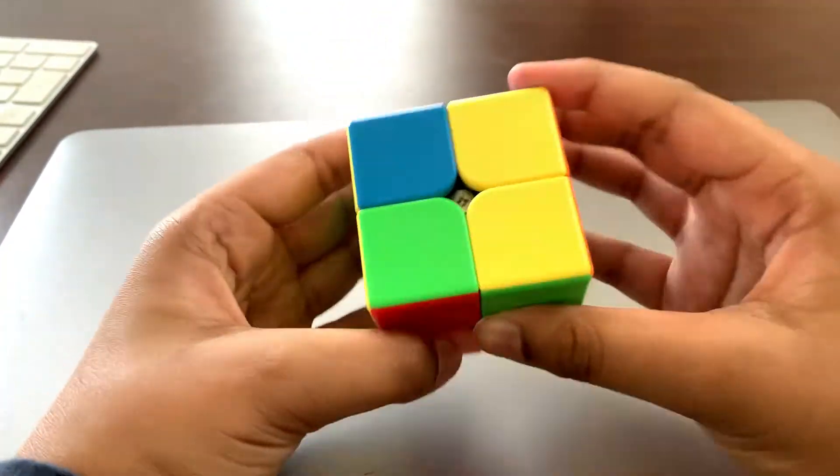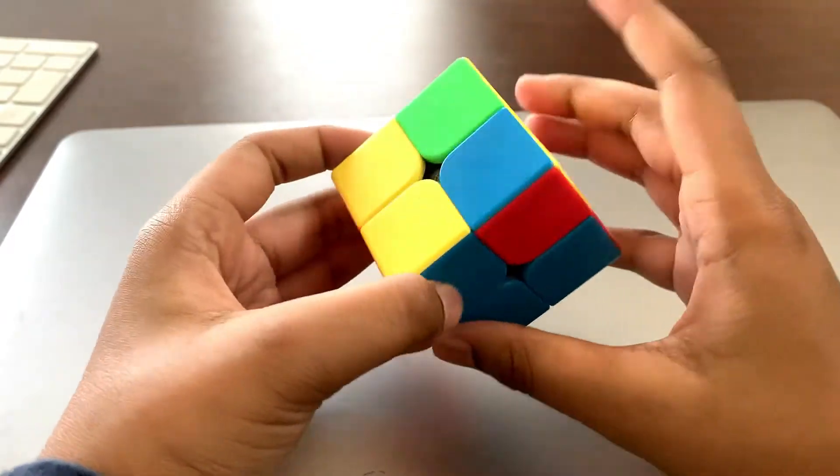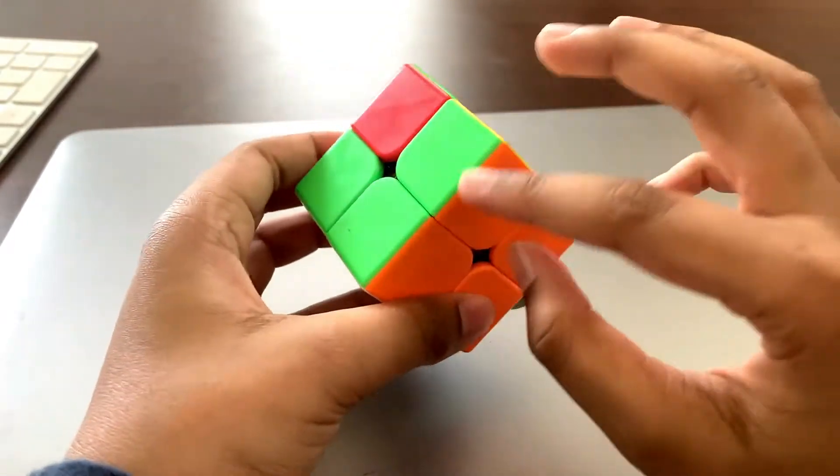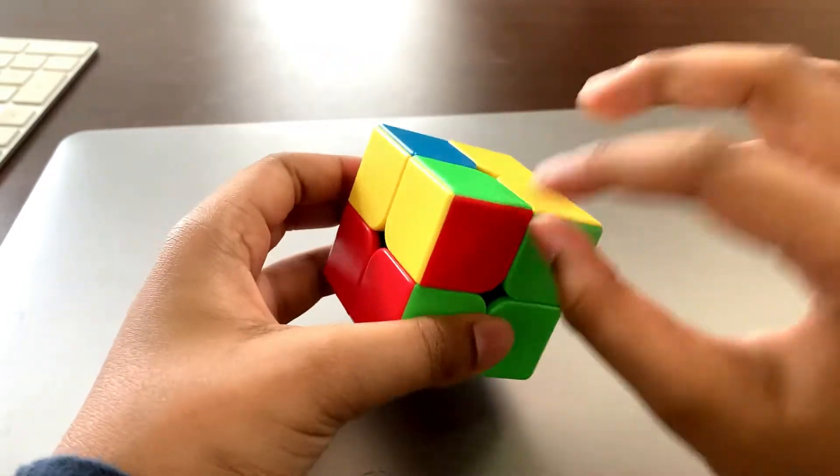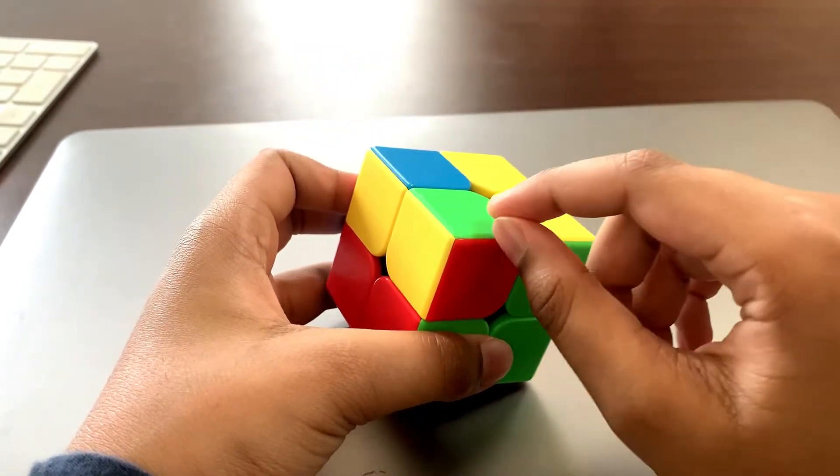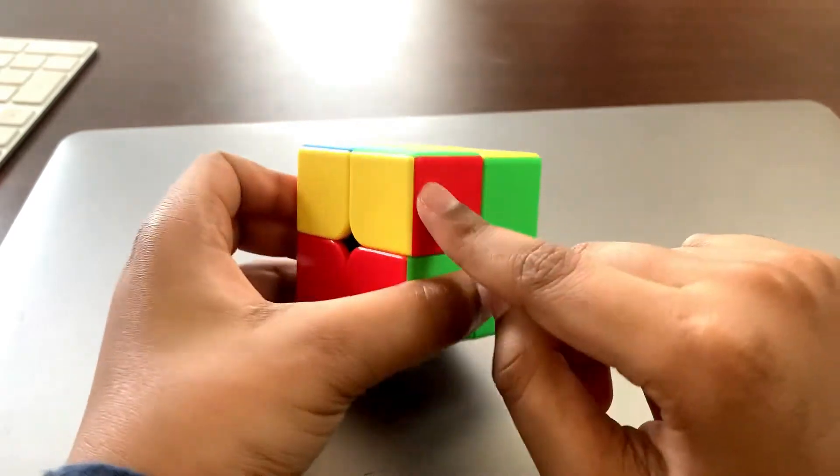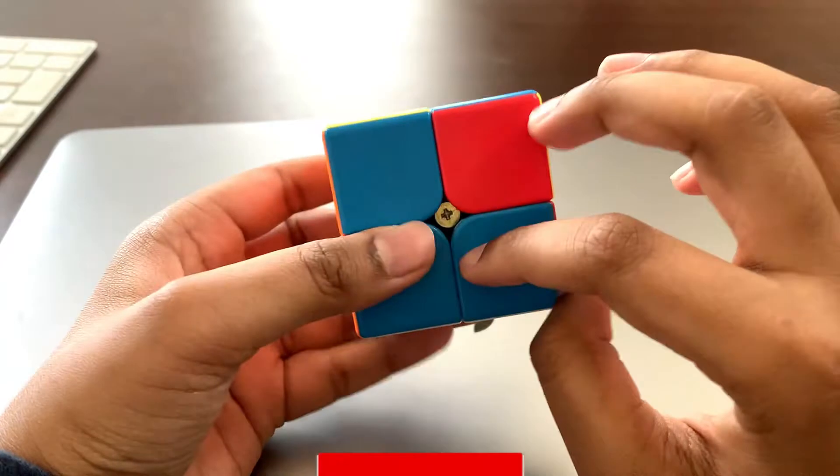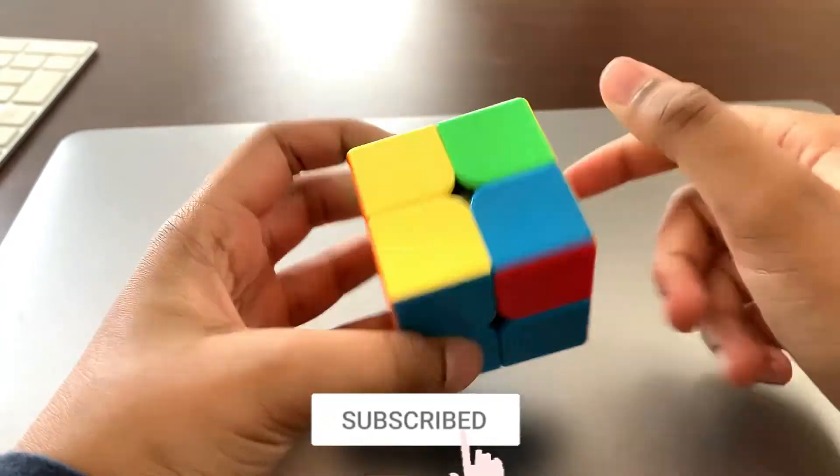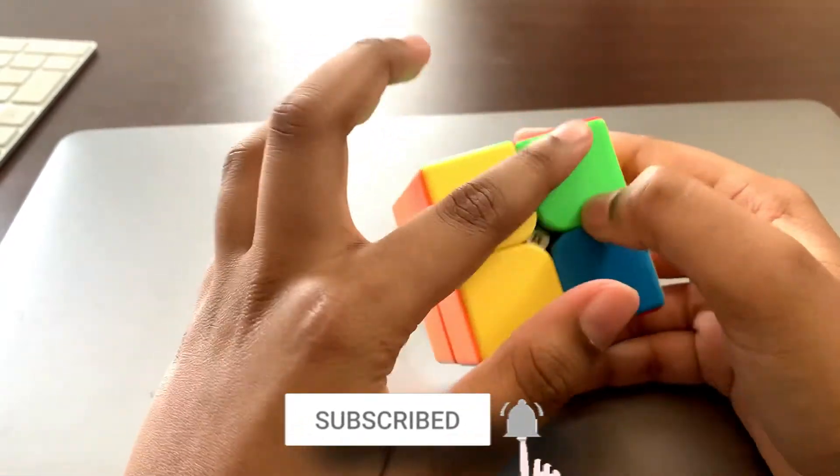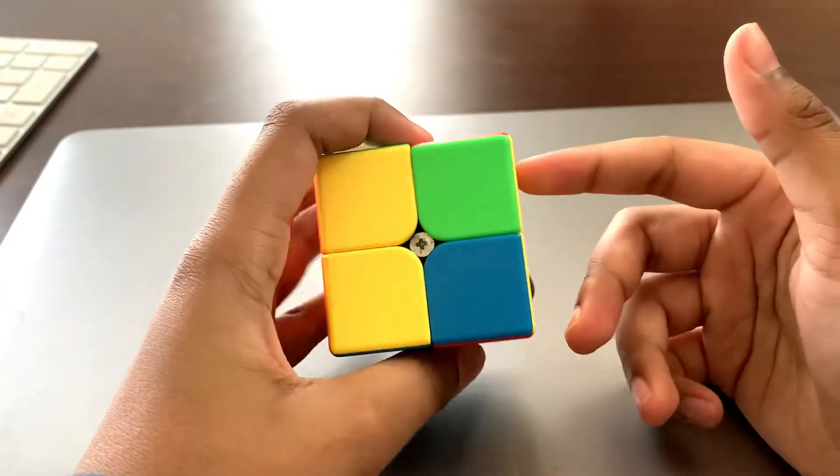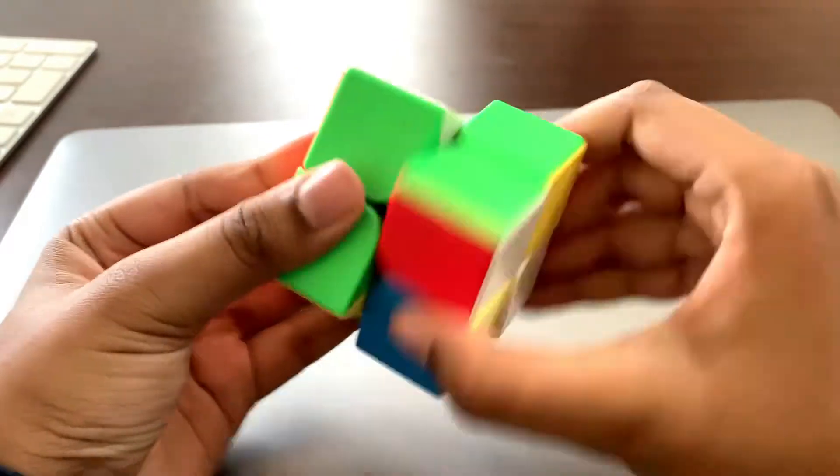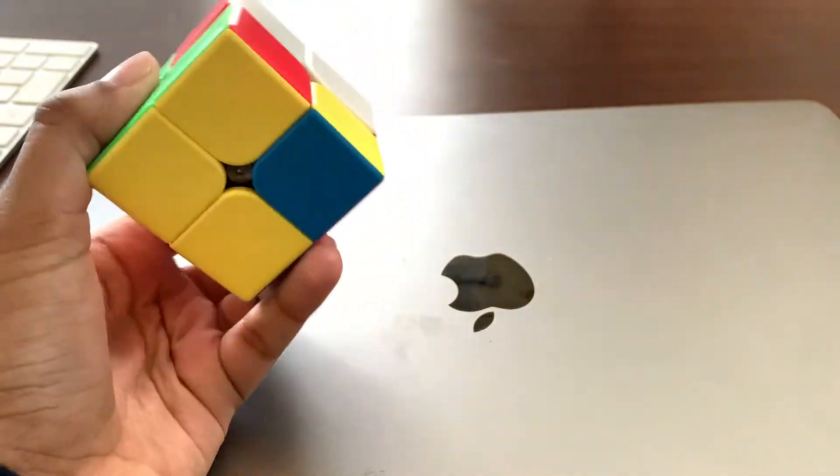Let's move on to the next layer, which is layer number two. Let's see if we need to orient these corners. That's correct. That's also correct, that corner. Orange red yellow, that's correct. Blue red yellow, that's also correct. So all of the corners are correct.